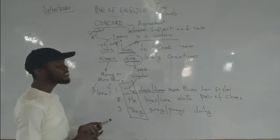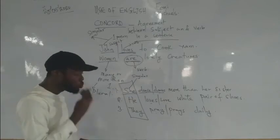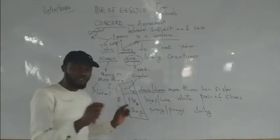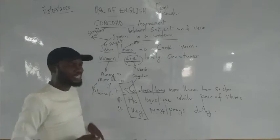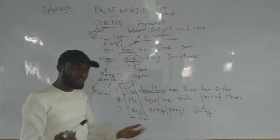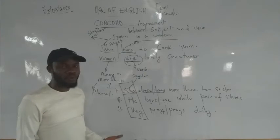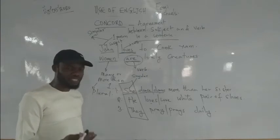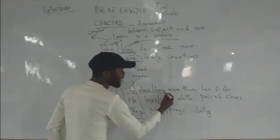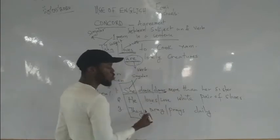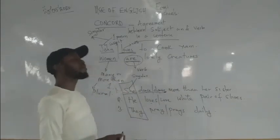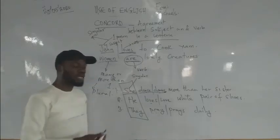The singular verb tells you it is singular because it has S at the back of the word. That S is telling you it is singular. For example, 'dances' has an S, so it is the singular verb. 'Dance' does not have S, so it is the plural verb. Let's check the second example: 'He' — is he singular or plural? He is one person, so he is singular.